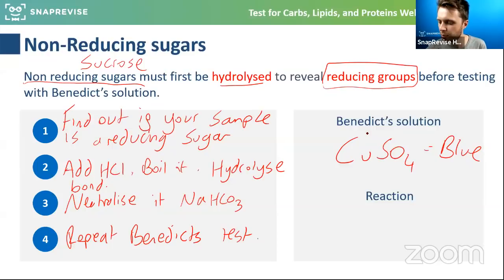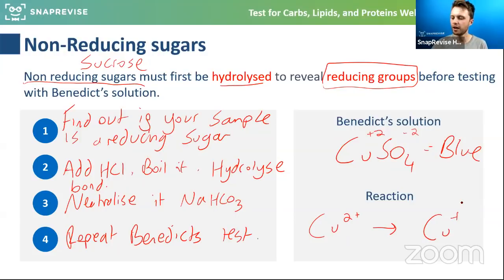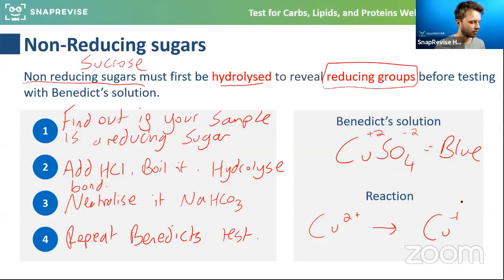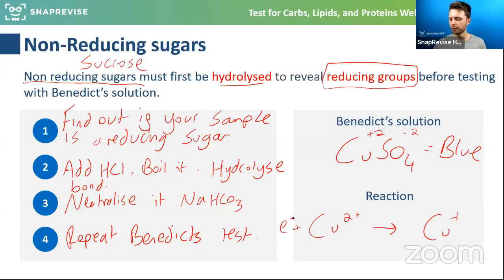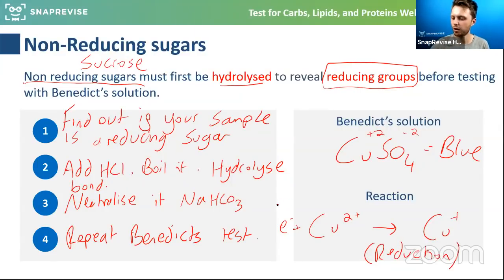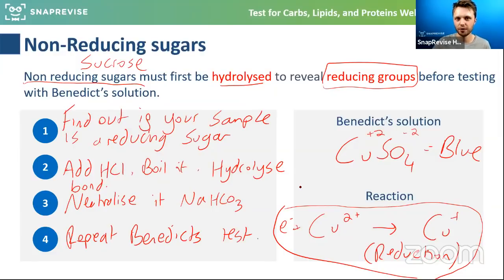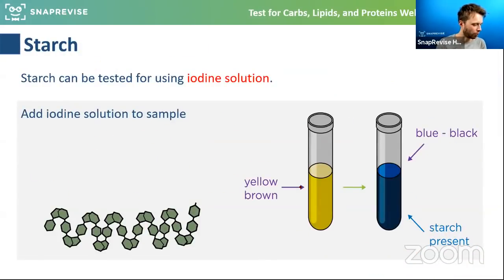Benedict's solution contains copper sulfate (CuSO₄), which is why it's blue. Copper is Cu²⁺ and SO₄ is 2−. By reducing it, you turn Cu²⁺ into Cu⁺ — adding an electron to something is reduction. That's why the colour changes from blue to orange/brick red.